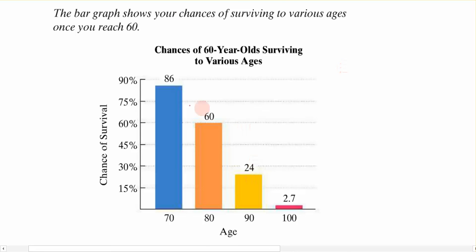Here I have a chart that shows your chances of survival to various ages once you reach 60. So if you are the age of 70, your chance of survival rate would be 86%. If you're 90, your chance of survival rate would be 24%, and so on.